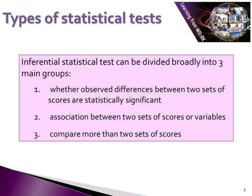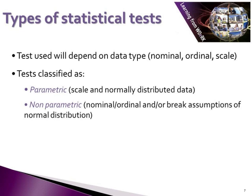We are going to talk about each one of those in turn throughout this lecture series. The test that you choose is dependent on the data type or the level of measurement of your data — i.e. whether it is nominal, ordinal, or scale. Scale is both interval and ratio. Tests are classified as parametric, which deals with scale data that is normally distributed, and non-parametric, which deals with nominal or ordinal data or data that breaks the assumptions of a normal distribution.